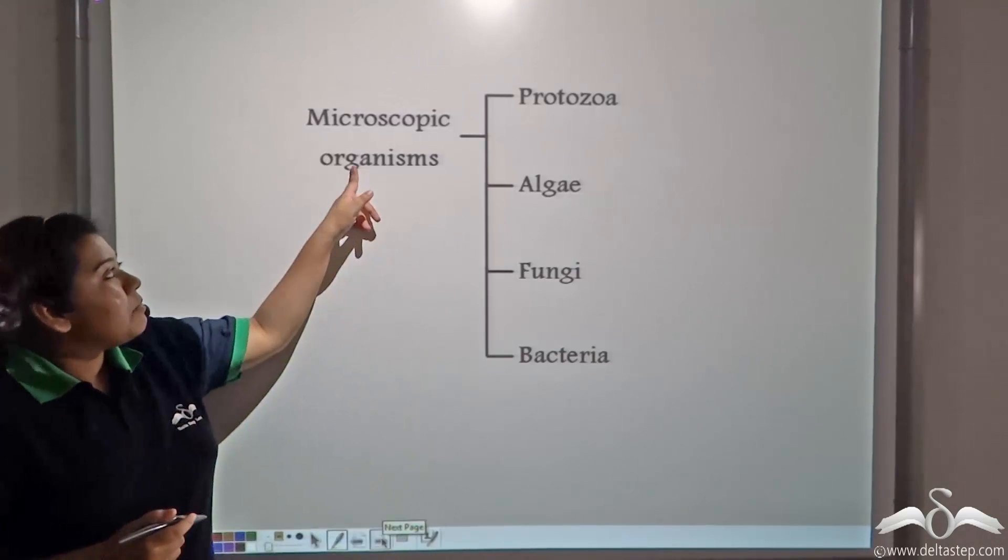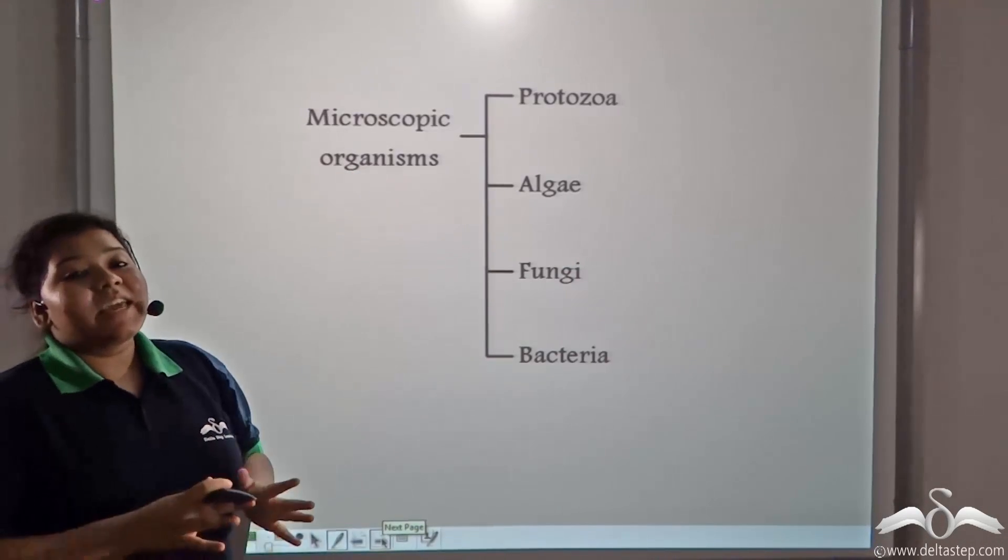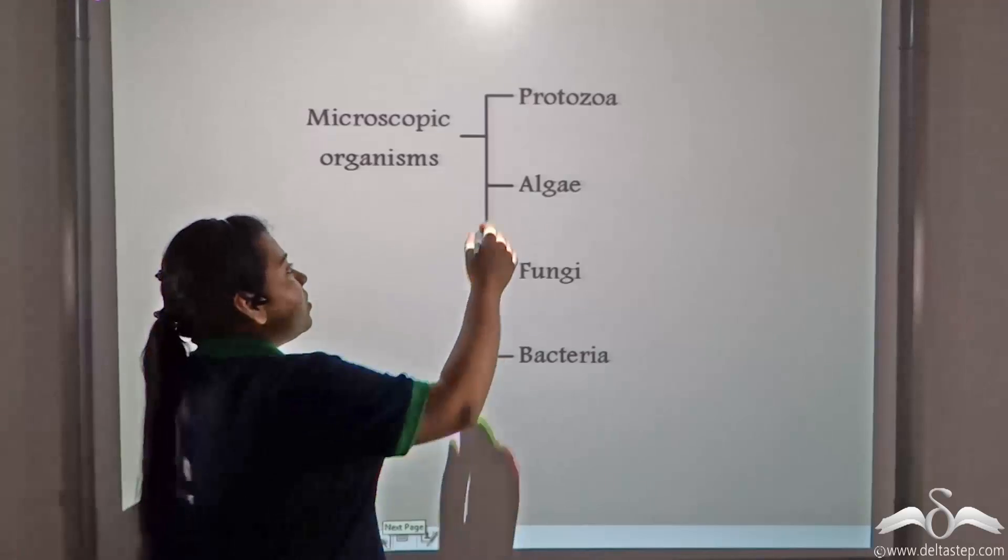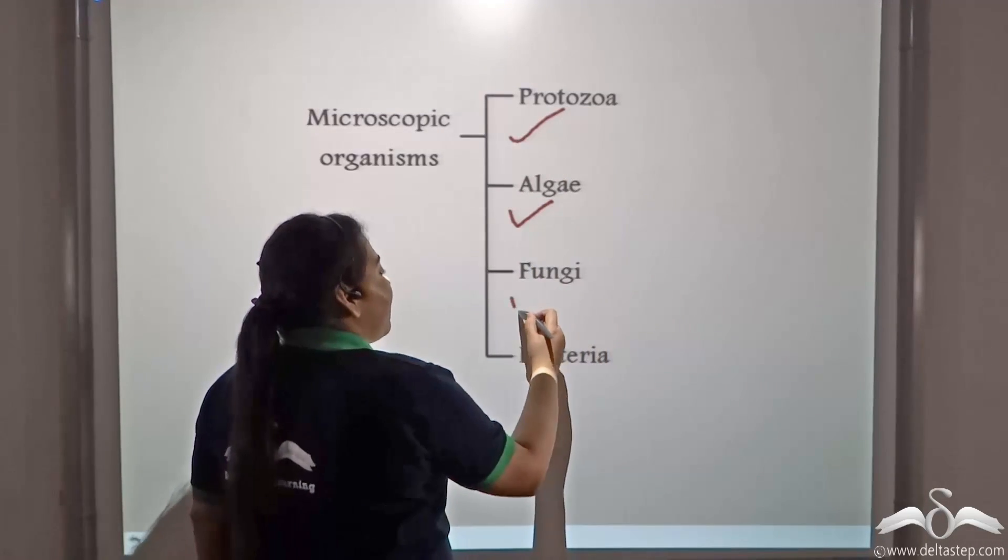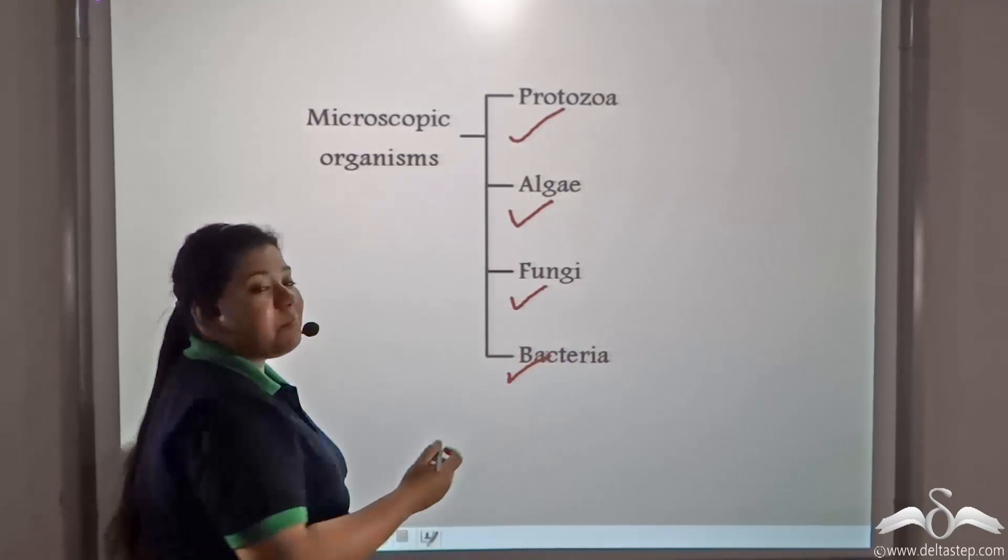So finally, microscopic organisms can be classified into protozoa, algae, fungi, and finally bacteria.